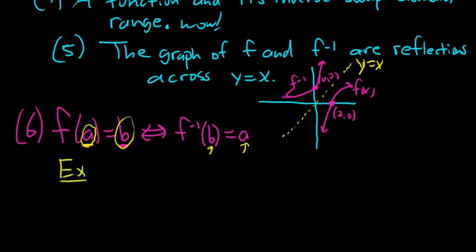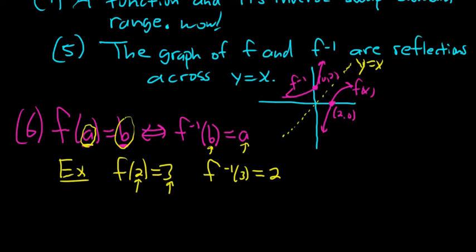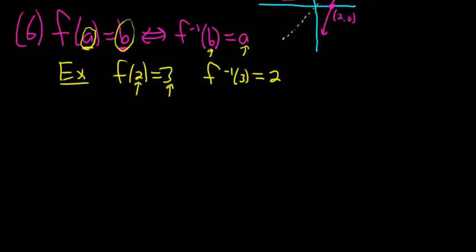As an example, let's say you have f(2) = 3. So f takes 2 and sends it to 3. So that means that the inverse function takes 3 and sends it back to 2. Very, very useful stuff. So let's go ahead and do a simple example to verify that two functions are inverses.